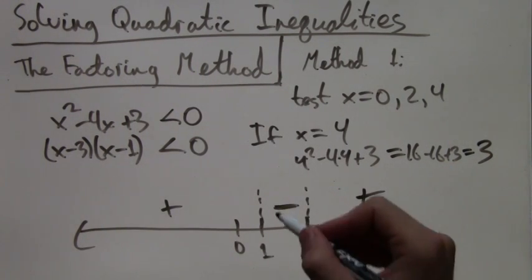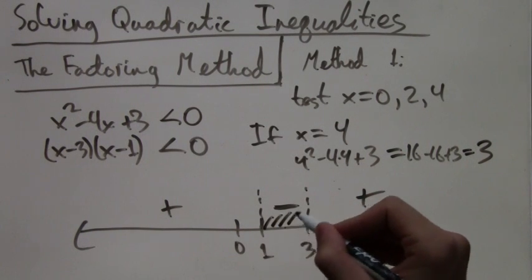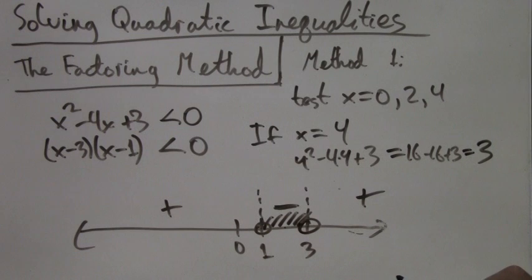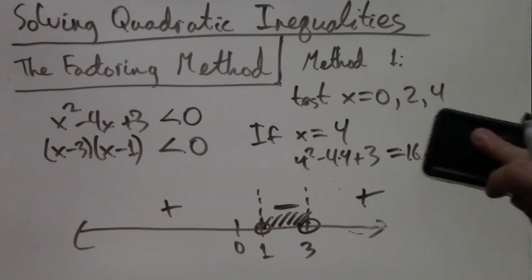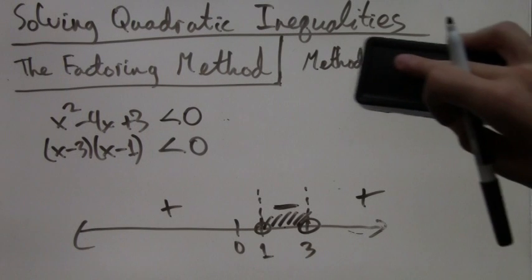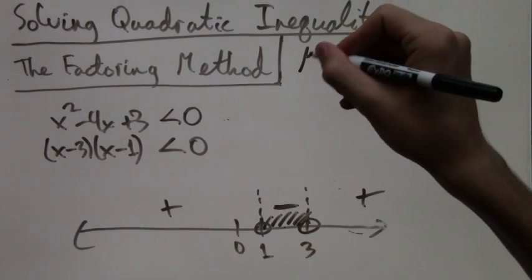Our original inequality was asking for less than 0, or negative. So we highlight the negative section, the interval between the roots, and we put open circles because we don't want to include the roots. We want strictly less than 0.